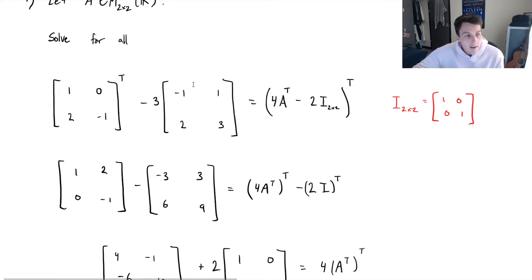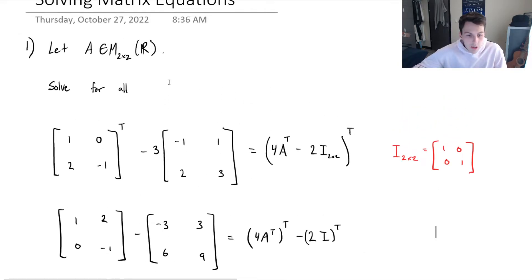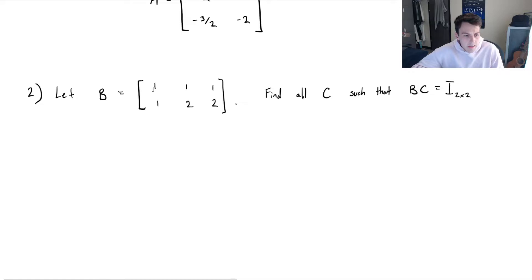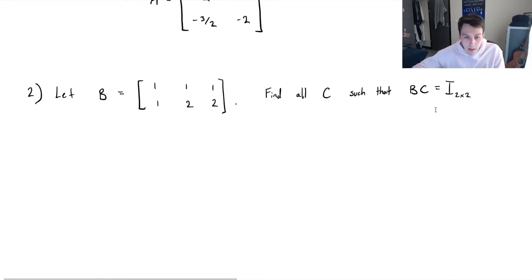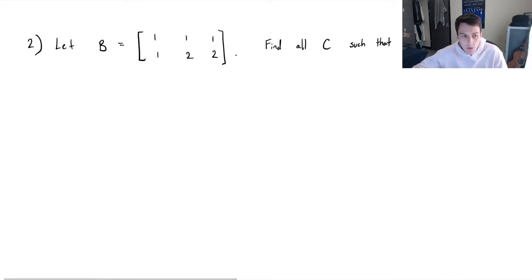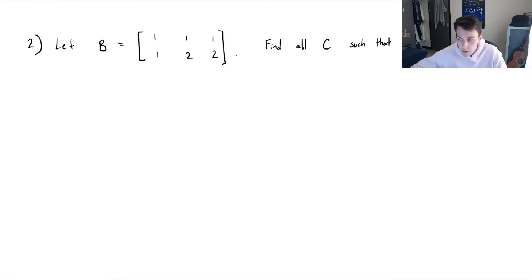Now, this was in the case of a 2 by 2 matrix. I'd like to do another example where we have a 2 by 3 matrix B, and we want to find another matrix C such that when we multiply C and B together, we end up with the identity matrix. The first thing we need to figure out is what size of matrix can we multiply B by so that we obtain a 2 by 2 identity matrix, because not all matrices are compatible when we multiply them together.